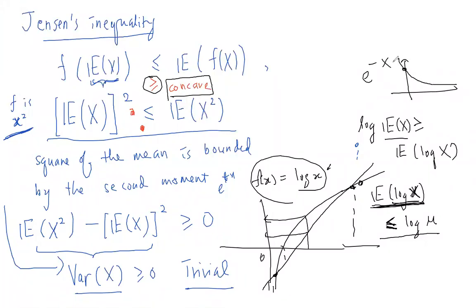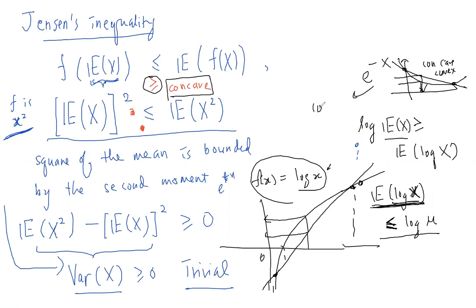That decaying function e^(-x) is convex. The absolute value function |x| also came up — and it is actually convex: any secant line between two points dominates the curve value.